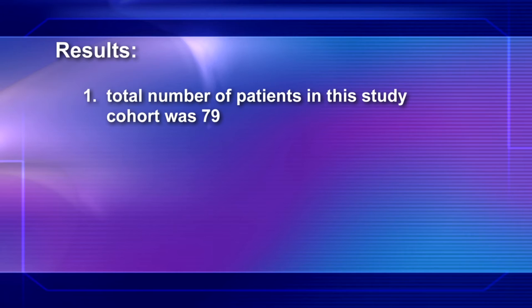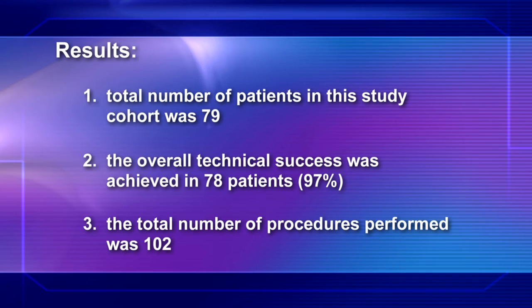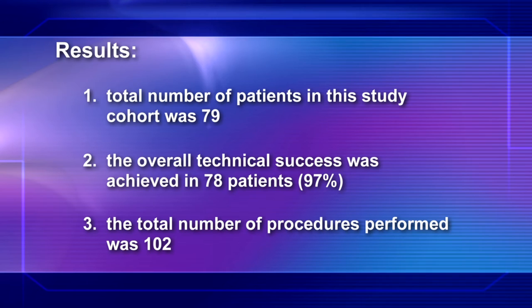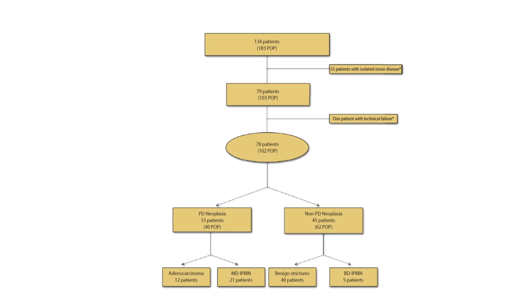The total number of patients included in this study cohort was 79. The overall technical success was achieved in 78 patients, close to 97%. The total number of procedures performed was 102. 33 patients had PD neoplasia, and 44 patients did not. The PD neoplasia group included patients with pancreatic duct adenocarcinoma and main duct IPMN. The non-PD neoplasia group included patients with benign stricture, mainly in the context of chronic pancreatitis, and patients with branch duct IPMN. The mean follow-up was 62 months. Adverse events were noted in 12 cases, of whom 4 patients had post-procedure acute pancreatitis, accounting for a total of 4%.